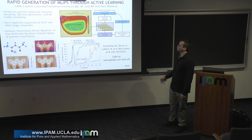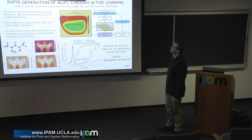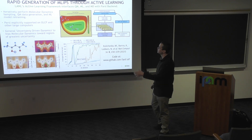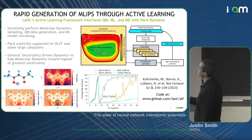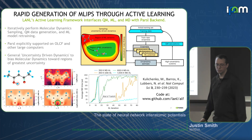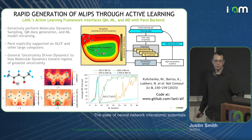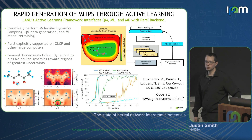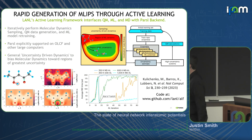In some work with Los Alamos, we've thought about science approaches to make sampling faster rather than just a hard-coding approach. One thing we tried was uncertainty-driven molecular dynamics — think of it as a biased MD where you don't have to pick your collective variable. Your uncertainty is your bias, so you sample to push your systems towards higher-uncertainty regions.